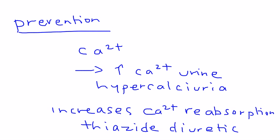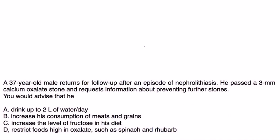Let's take a look at some vignettes. 37-year-old male returns to follow-up after an episode of kidney stones. He passed a 3-millimeter calcium oxalate stone and requests information about preventing further stones. You would advise him that - well, let's go through these. Drink up to 2 liters of water a day. Definitely very common advice. Increasing water intake can definitely help pass small, very small stones.